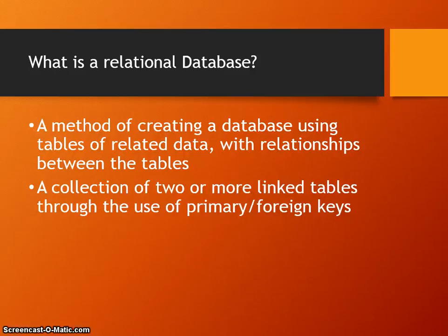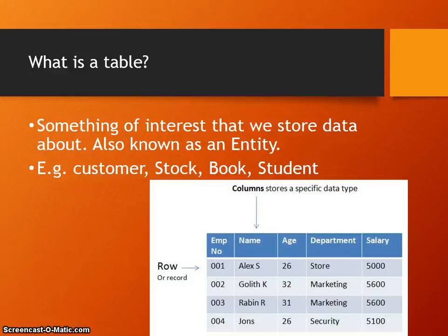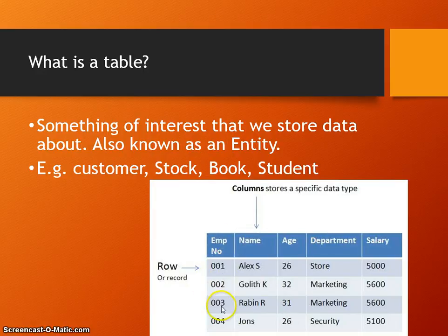We've used a lot of keywords so far: table, entity, attribute, primary and foreign keys, and records. Let's look at what each of those means. A table is something of interest that we store data about — also known as an entity. Examples of tables we may have are: customer, stock, book, student, dog, class, course, teacher — something we want to store data about. This is an employee table, and we can see the employee number, their name, their age, the department they work in, and their salary.